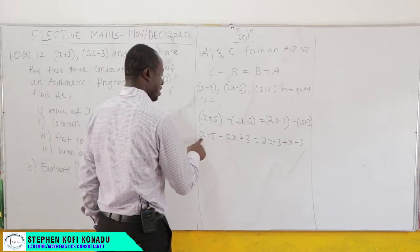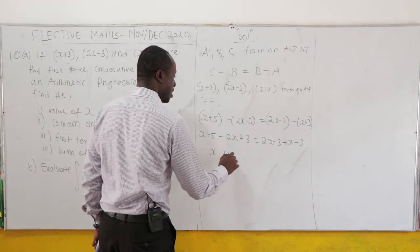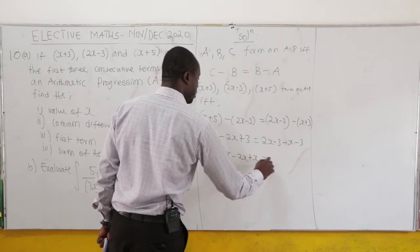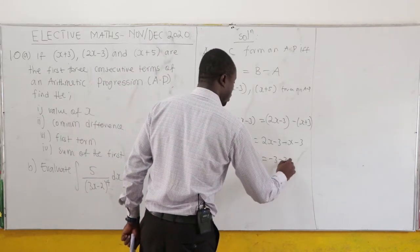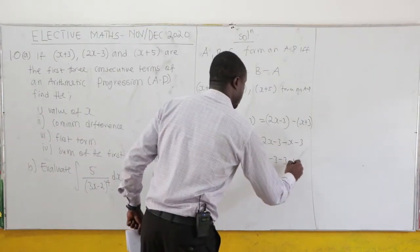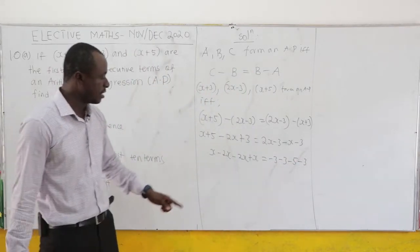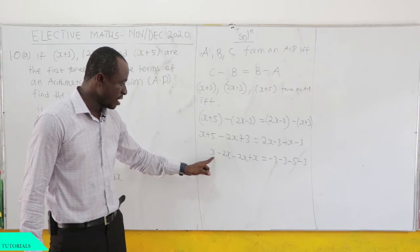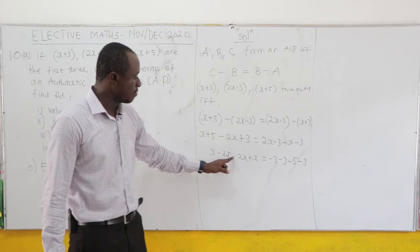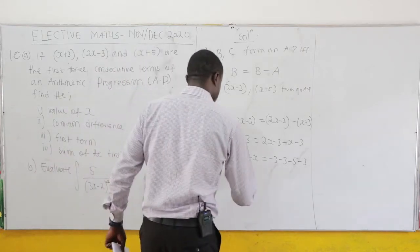Collecting the x terms on the left: x minus 2x plus x, and on the right: 2x minus x. That gives negative 2x on the left side.